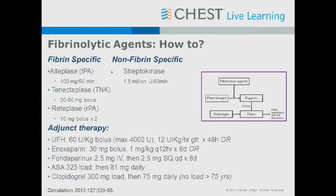When giving fibrinolytics, you give adjunctive therapy — a Chinese menu of cardiology: an antiplatelet agent or two and an anticoagulant in addition to the fibrinolytic. In general, we give unfractionated heparin, enoxaparin, or fondaparinox; aspirin for everybody; and typically a second agent, usually clopidogrel.